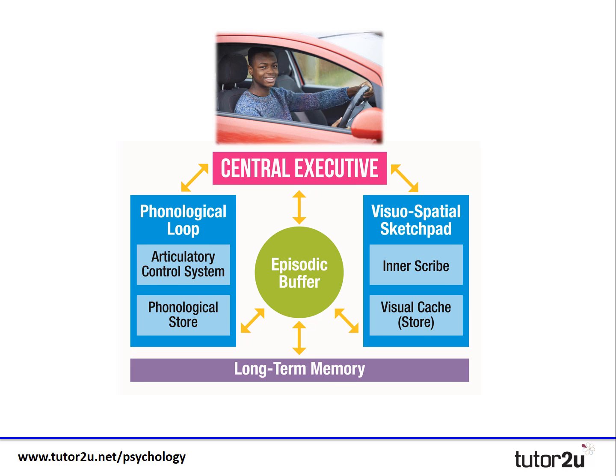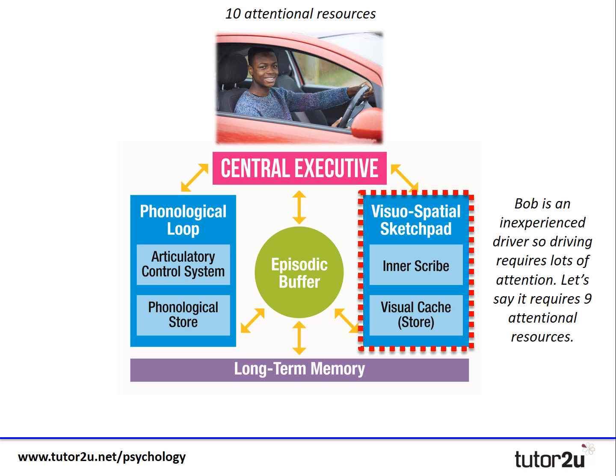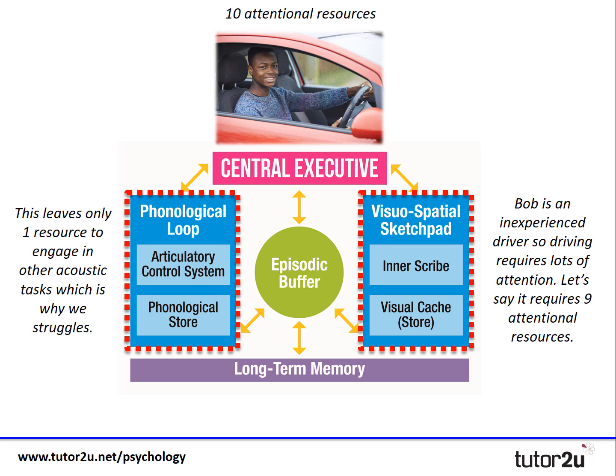Let's turn that example over now. Bob, on the other hand, is the inexperienced driver. So let's assume he also has 10 attentional resources available. For Bob, his visuospatial sketchpad is going to place a much larger demand on the central executive — let's say it's going to require nine out of the 10 available resources. This is only going to leave one attentional resource available for other tasks, which clearly explains why he struggles to hear or even listen to the instructions his driving instructor is giving him.